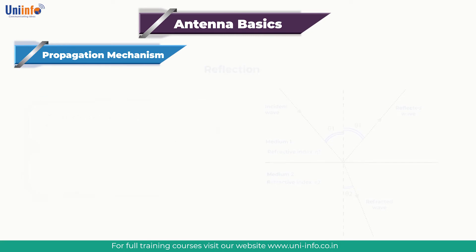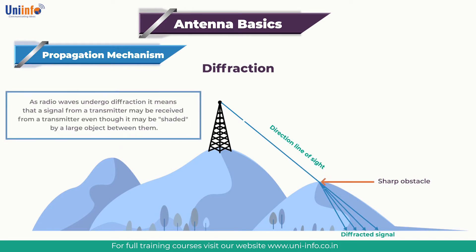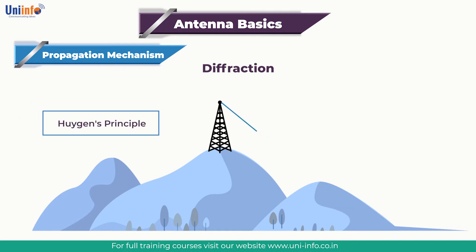Next is diffraction, or shadowing. Electromagnetic waves can be diffracted when they meet a sharp obstacle. As radio waves are a form of electromagnetic wave, they can also be diffracted. This means that a signal from a single transmitter may be received even though a large object is positioned between the transmitter and receiver.